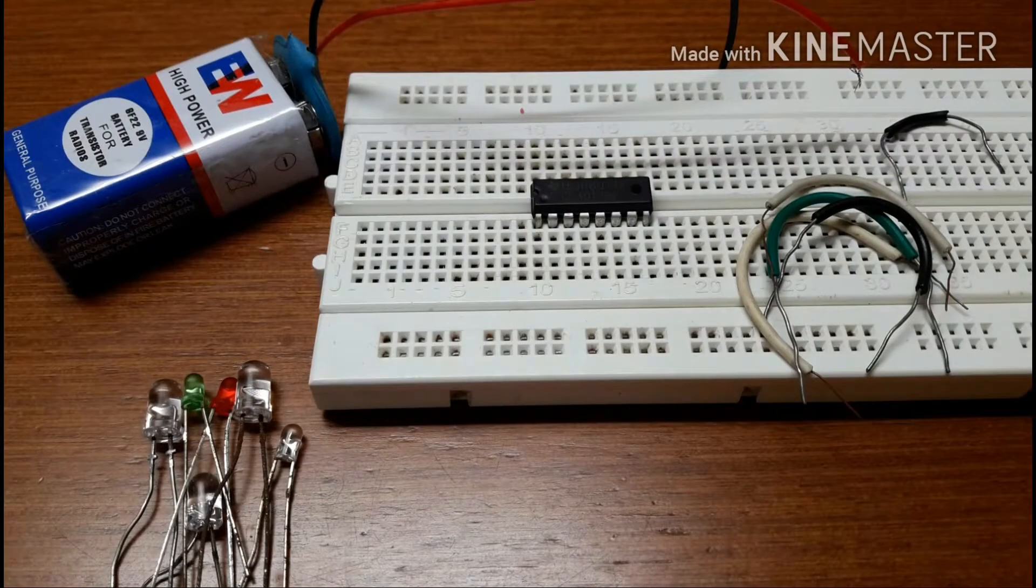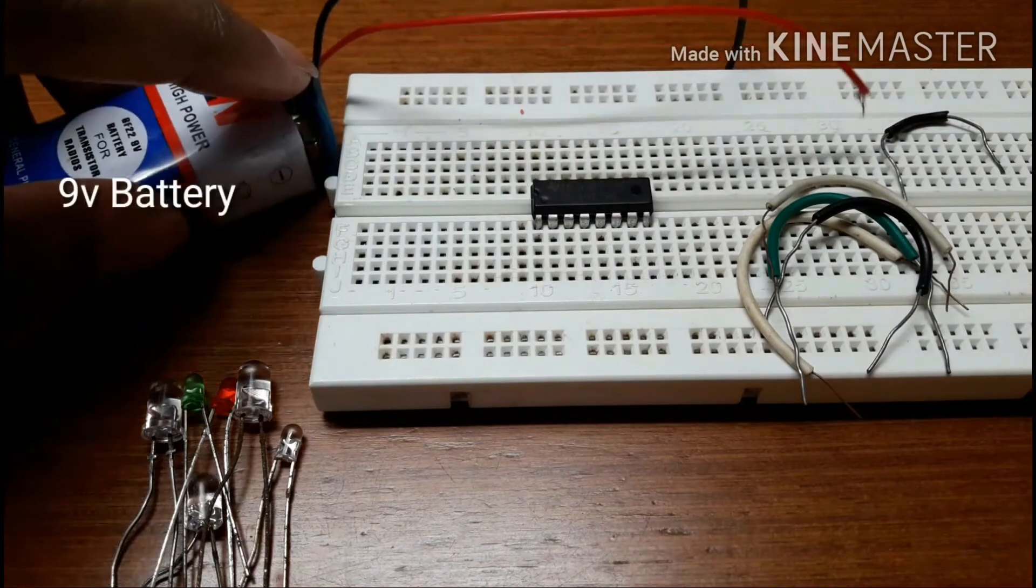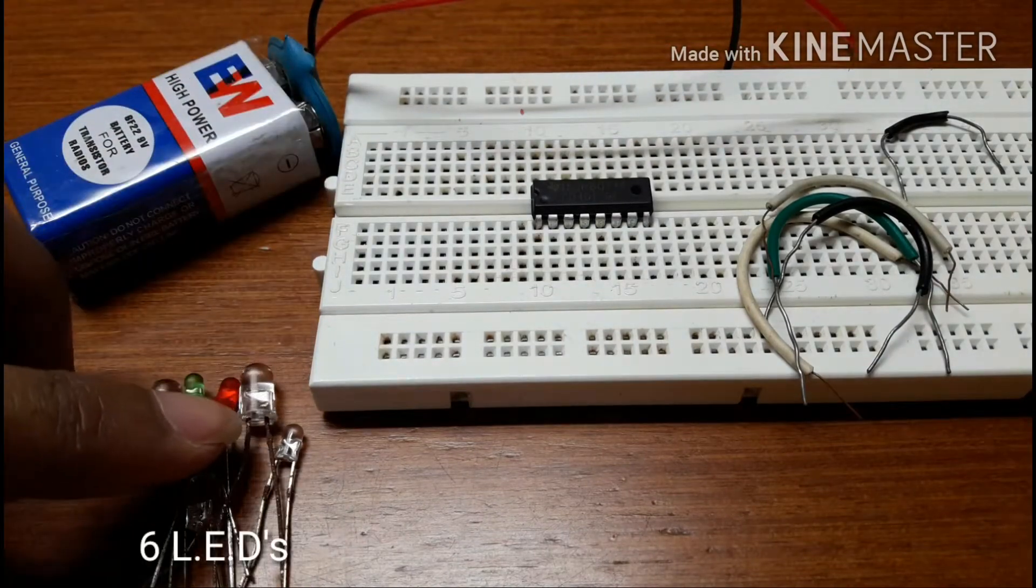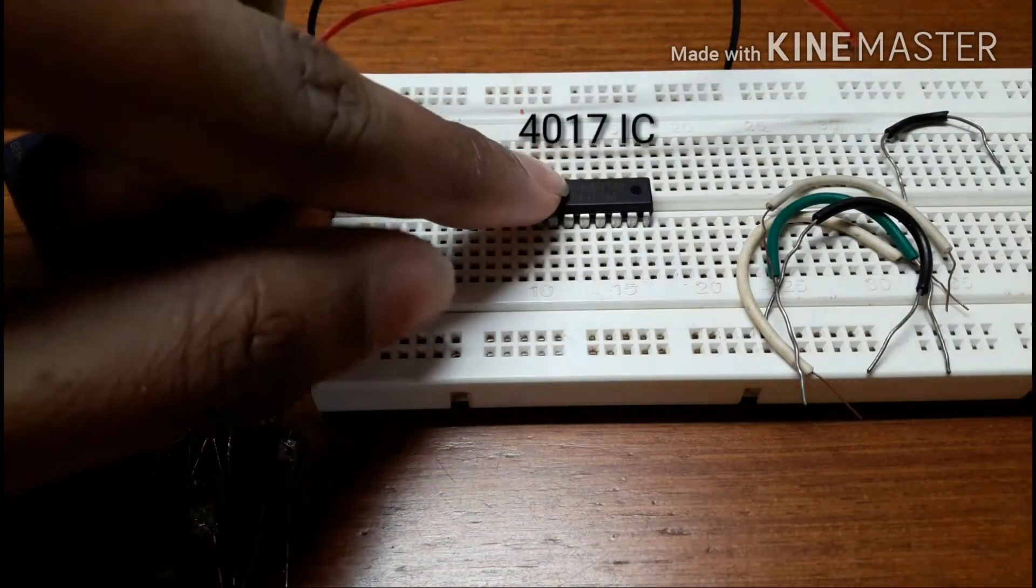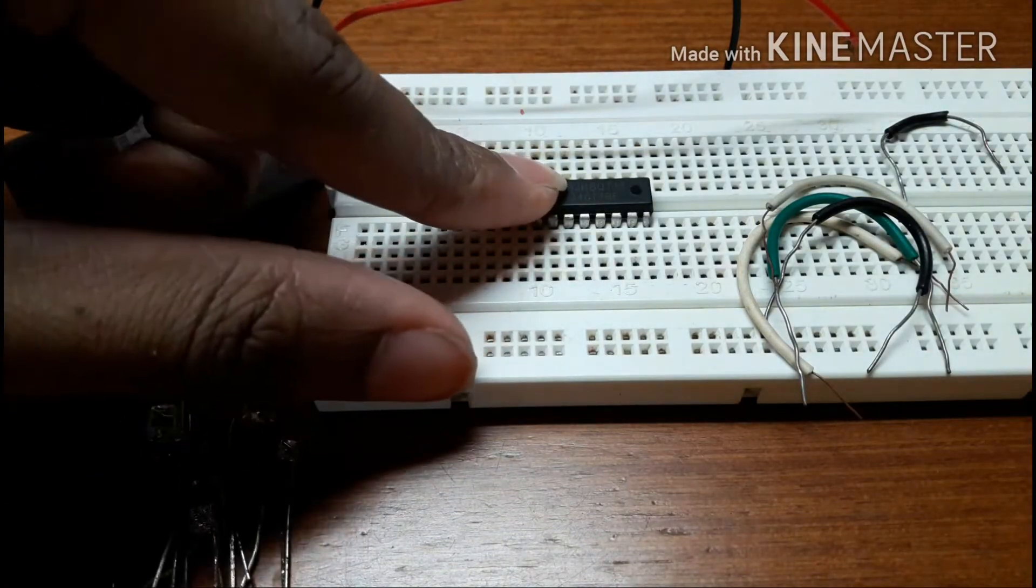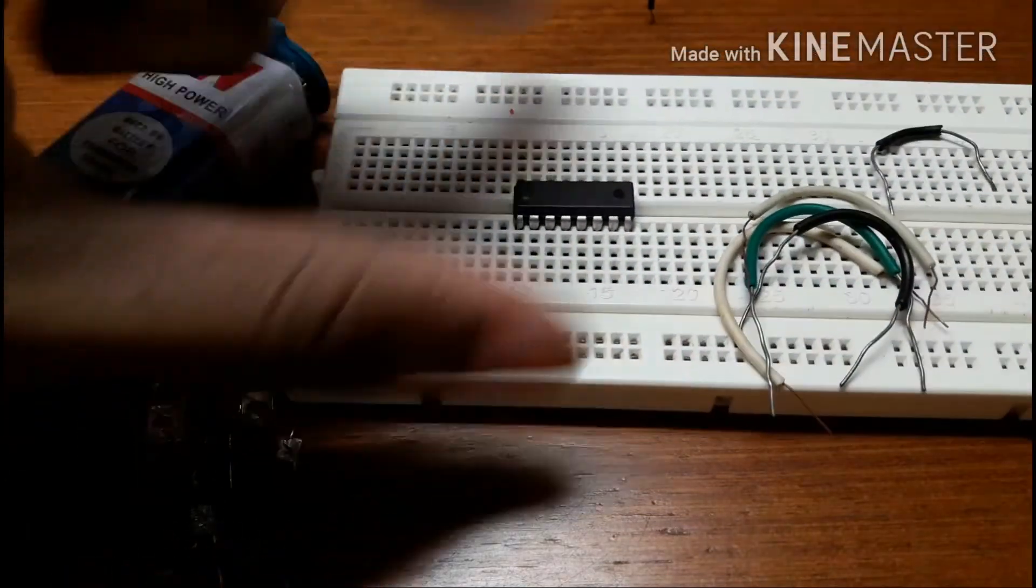So for this project, you're going to require a 9V battery with a battery clip, 6 LEDs of different colors, a breadboard, a 4017 IC which has 16 pins, and some wires.